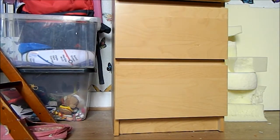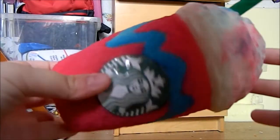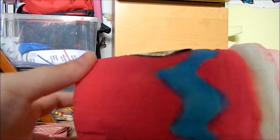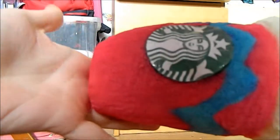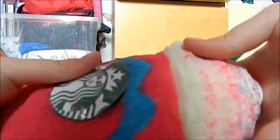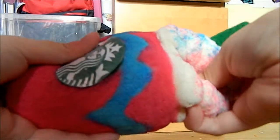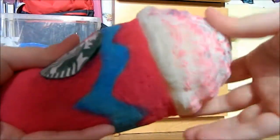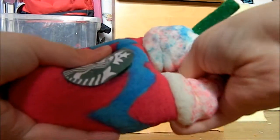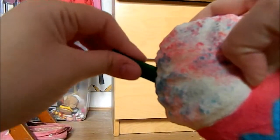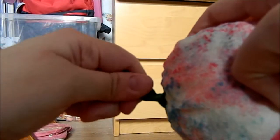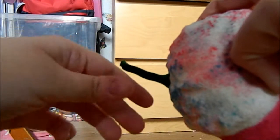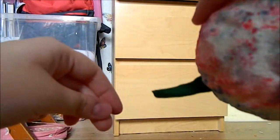Next I have this Starbucks unicorn frappuccino squishy, which I have a tutorial on. This is also really soft, and the straw is extremely squishy as you can see—it goes completely flat.